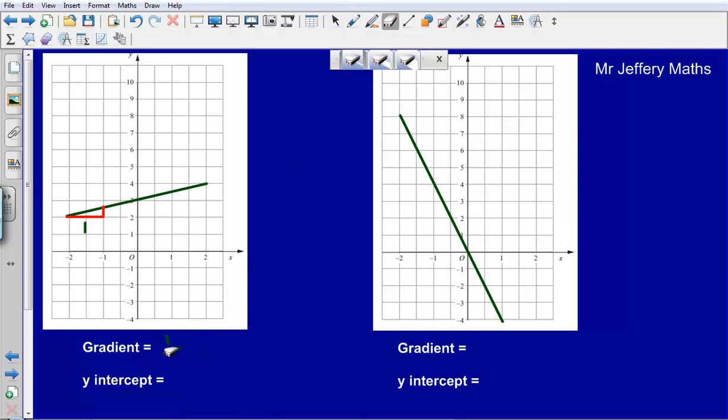So what I could say is that my gradient here is half. My gradient there is a half, because all that I'm doing is when I'm moving along by one on the x-axis, I'm only moving up by half on the y-axis.